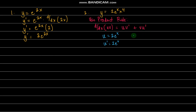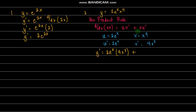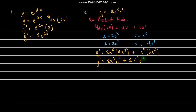And v here is x to the 4th, therefore v prime equals 4x cubed. So we now have y prime equals u times v prime, which is 2e to the x times 4x cubed, plus v times u prime, which is x to the 4th times 2e to the x. Therefore y prime equals 8x cubed times e to the x plus 2x to the 4th times e to the x.